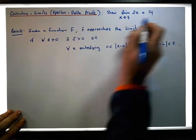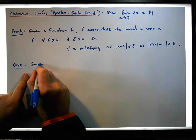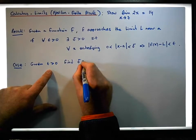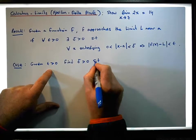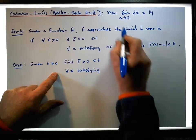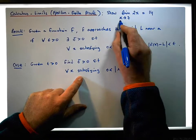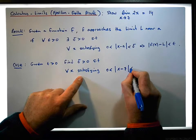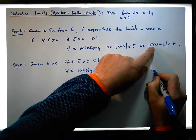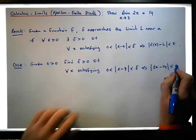So in this particular case, what we need is this: if we're given an epsilon greater than 0, we need to find a delta greater than 0 such that for each and every x satisfying 0 less than |x minus 7| less than delta — that has to imply that f(x), which is 2x, minus its limit, minus 14, has to be less than epsilon.